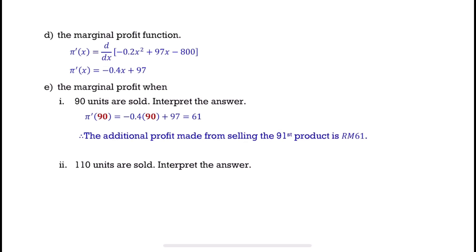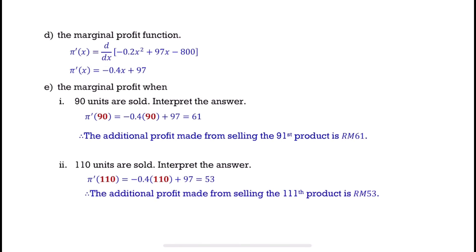Find the marginal profit when 110 units are sold. This means that the additional profit made from selling the 111th product is 53 ringgit.